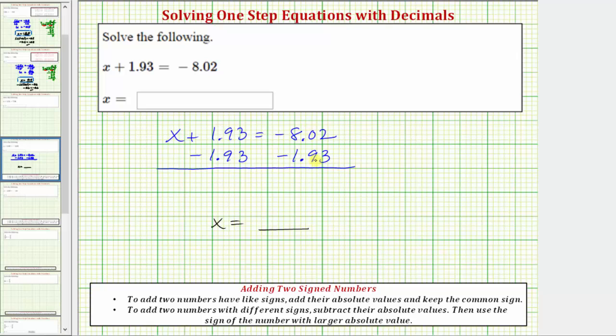Notice how showing the subtraction this way is equivalent to showing it vertically as I have here. So going back to our equation, we will now simplify both sides of the equation. Again, notice how by subtracting 1.93 here, we undo the plus 1.93. This simplifies to zero. So on the left side of the equation, we just have x equals, our solution will be this difference here.